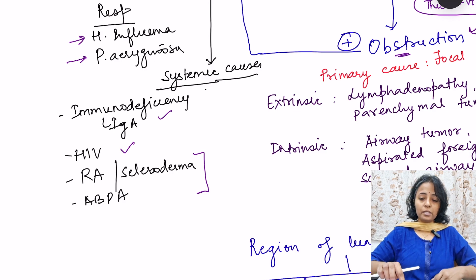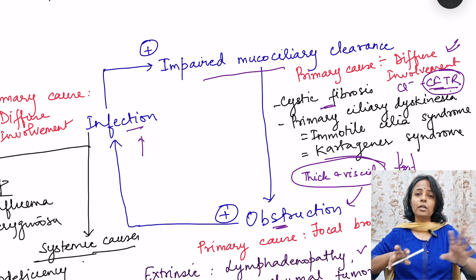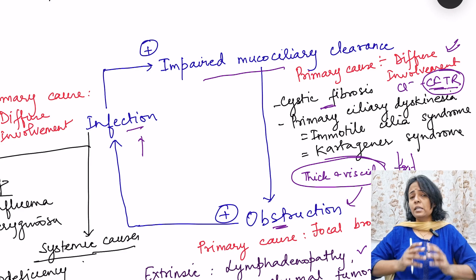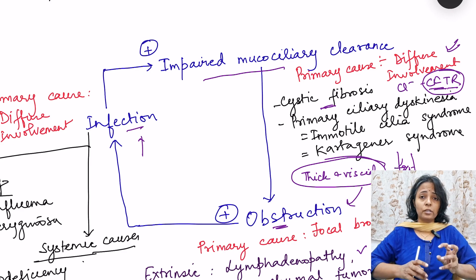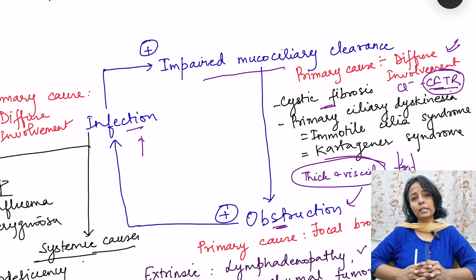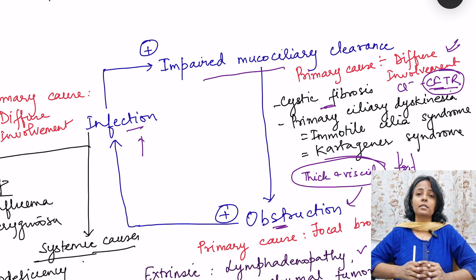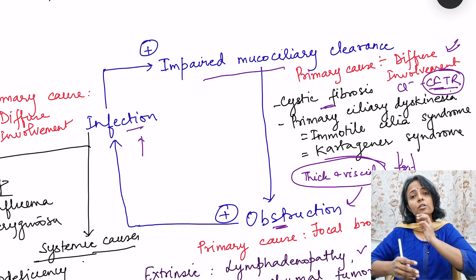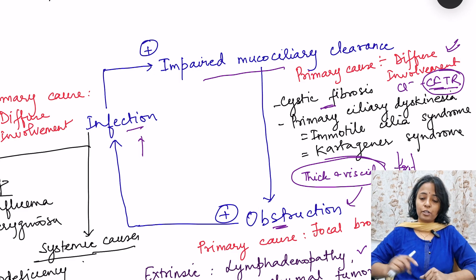Just remember this pathophysiology: impaired mucociliary clearance, obstruction, and infection — the primary cause can be anything. Bronchiectasis is not a primary disorder; it occurs due to some other cause. So whenever bronchiectasis is diagnosed, we have to look for the underlying cause so that we can treat it and prevent repeated infections.